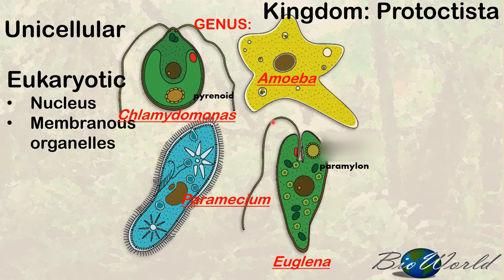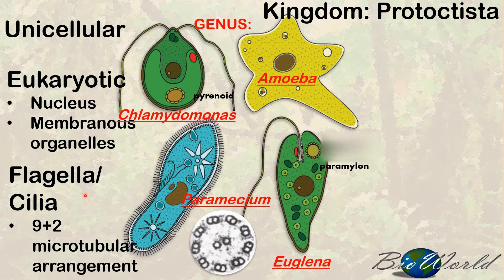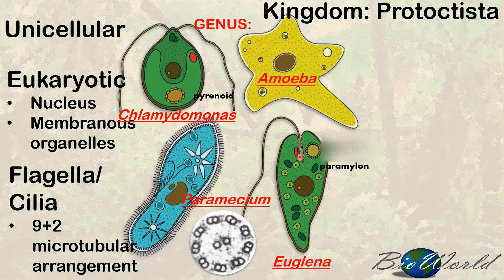Some of the organisms in kingdom protoctista are mobile, meaning that they can move. They move with the aid of hair-like extensions called flagella if long, and cilia if short. Both the flagella and the cilia, when cut, will show a 9-plus-2 microtubular arrangement. Note that the chlamydomonas has two equal-length flagella; however, the euglena has one long flagellum and one short flagellum. The long flagellum is used for movement, but the short flagellum is used to guide food into its gullet — so euglena is a bit special because it is both autotrophic and heterotrophic.